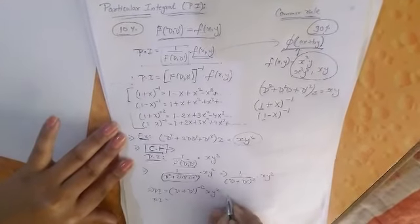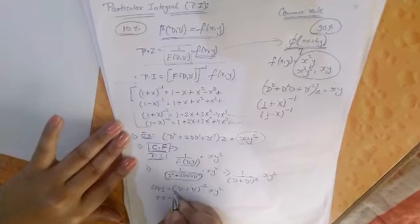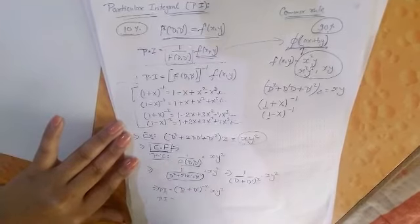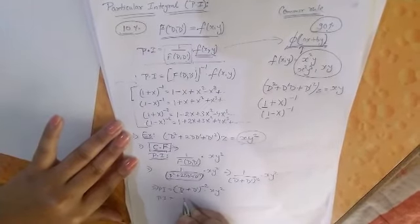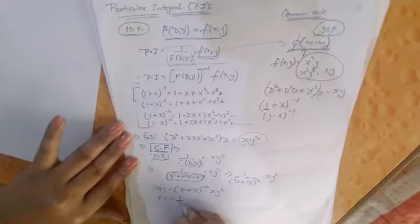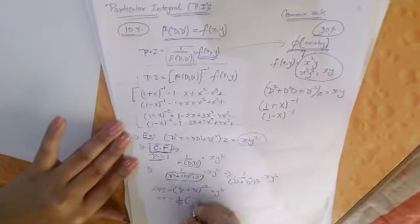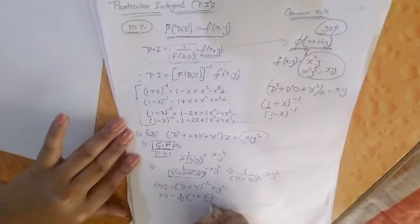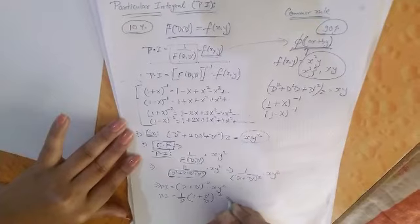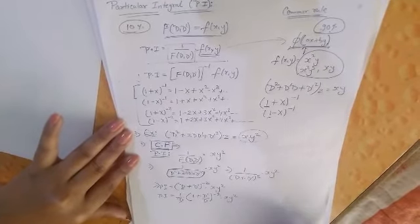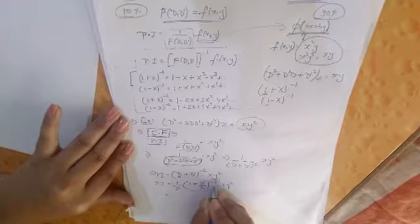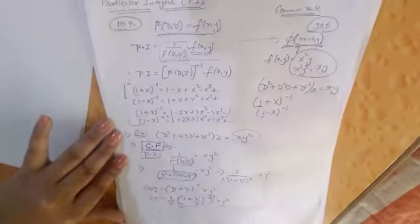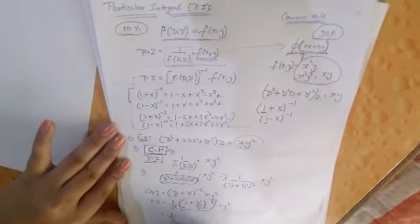Now we can take D common. 1 upon D will be 1 plus (D'/D) whole power minus 2 into xy². We have to solve this. We will apply formula here. I have already told you this is our formula. We will expand this accordingly. We can write 1 plus D'/D as 1 minus 2(D'/D) then next term will be plus 3(D')²/D².